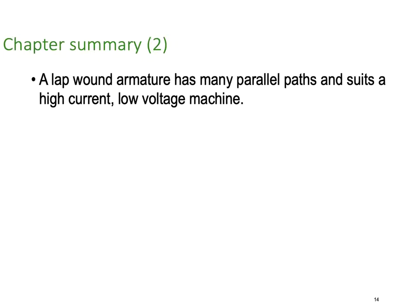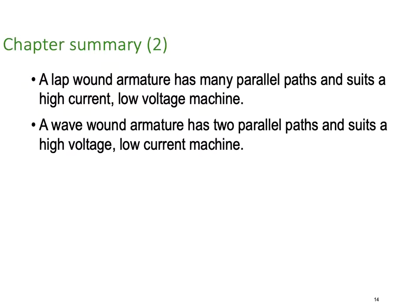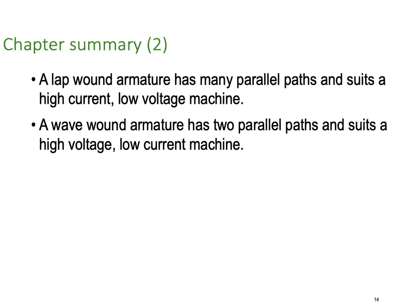A lap-wound armature has many parallel paths and suits a high current, low voltage machine. A wave-wound armature has two parallel paths and suits a high voltage, low current machine. The magnetic field in a generator can be produced by permanent magnets for smaller machines, or by field coils supplied by either an external DC source or by the generator itself. If by the generator itself, it will need some residual magnetism to get that field up and running.